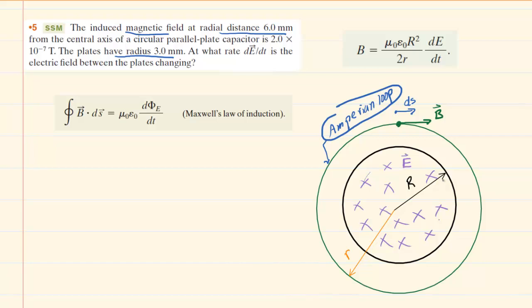We've labeled the radius of the plates capital R, and then the radial distance at which the magnetic field is induced with a lowercase r. The induced magnetic field lies outside of the circular plate region, and that is why we have chosen to draw our Amperian Loop at that location outside of the radius of the circular plates.